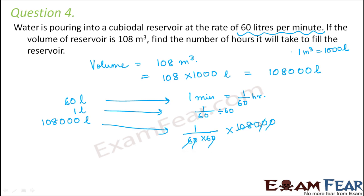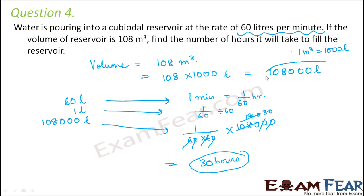Calculating: 108,000 divided by 3,600 equals 30. So it would take 30 hours to fill the reservoir. The volume of the reservoir is 108,000 litres; for 60 litres of water it takes 1/60 hours, therefore for 108,000 litres it would take 30 hours.